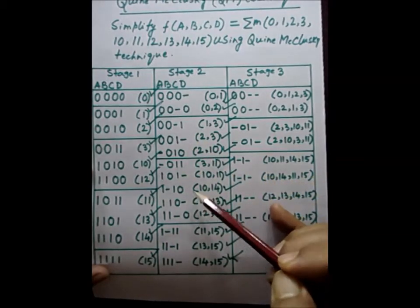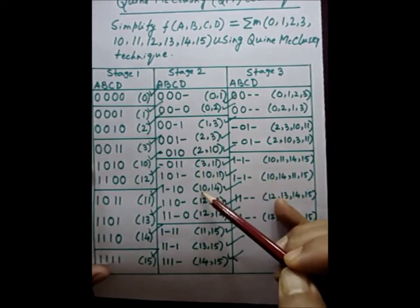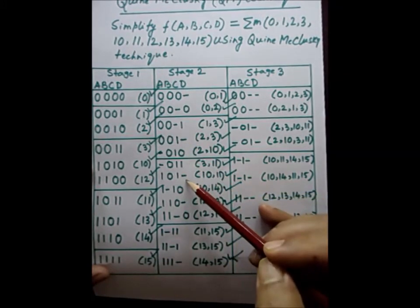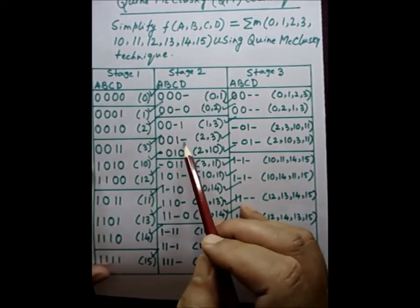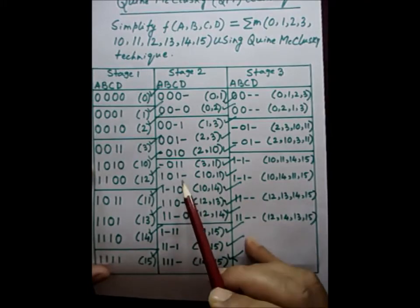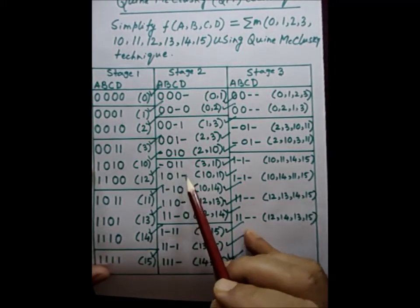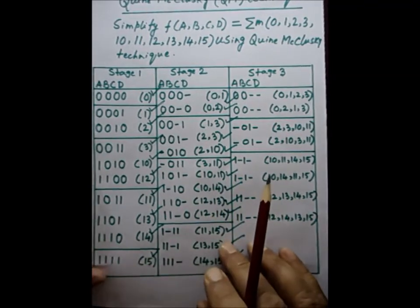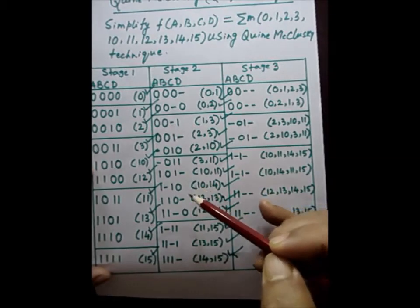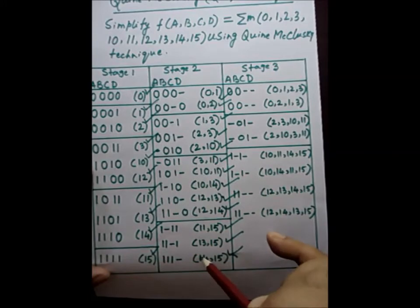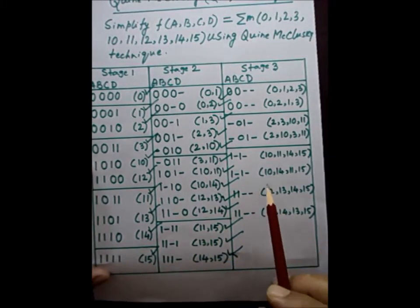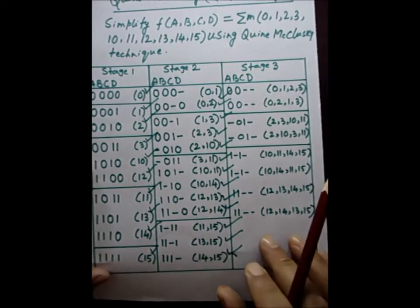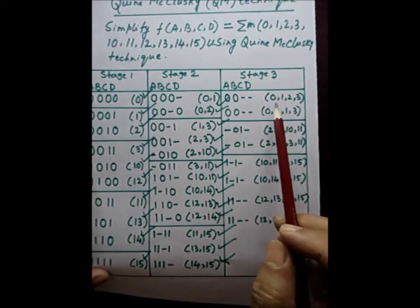The second group of stage 2 is mapped with the third group of stage 2, again requiring dashes to be in matching positions. For example, (2,3) — with a dash in the last position — is matched with (10,11) — also with a dash in the last position — giving a valid mapping. The results are transferred into stage 3, and similarly for the third group mapped with the last group.